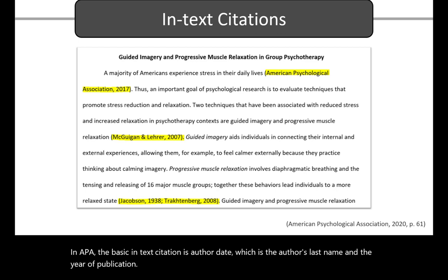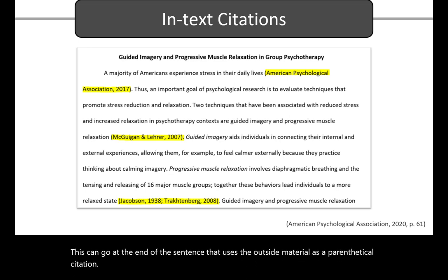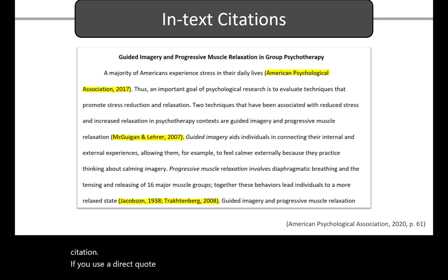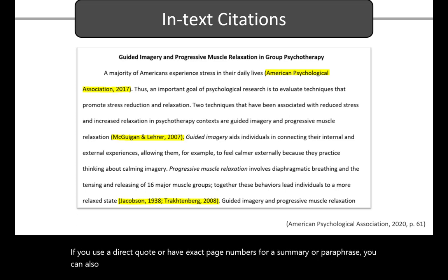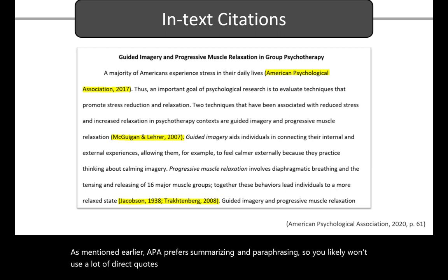This can go at the end of the sentence that uses the outside material as a parenthetical citation. If you use a direct quote or have exact page numbers for a summary or paraphrase, you can also include page numbers in the parenthetical citation. As mentioned earlier, APA prefers summarizing and paraphrasing, so you likely won't use a lot of direct quotes or page numbers.